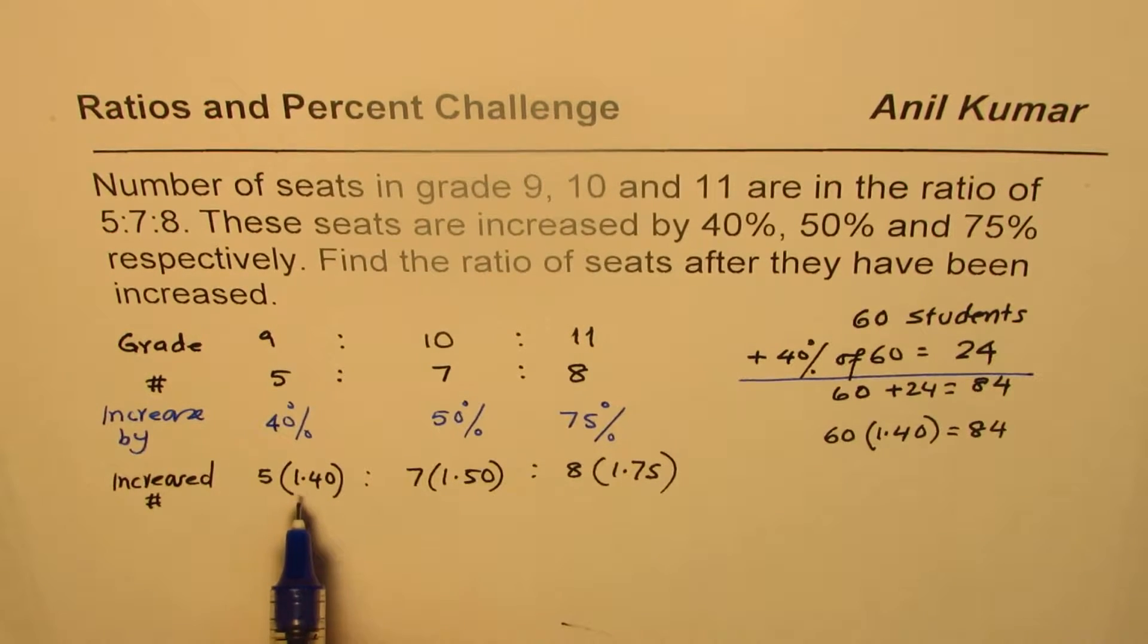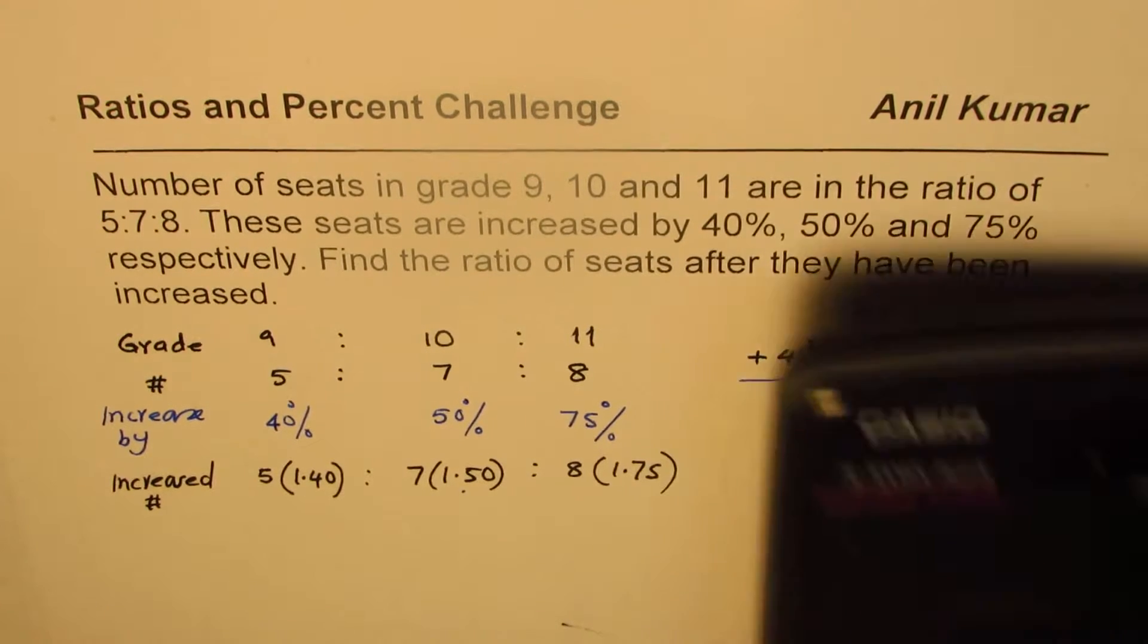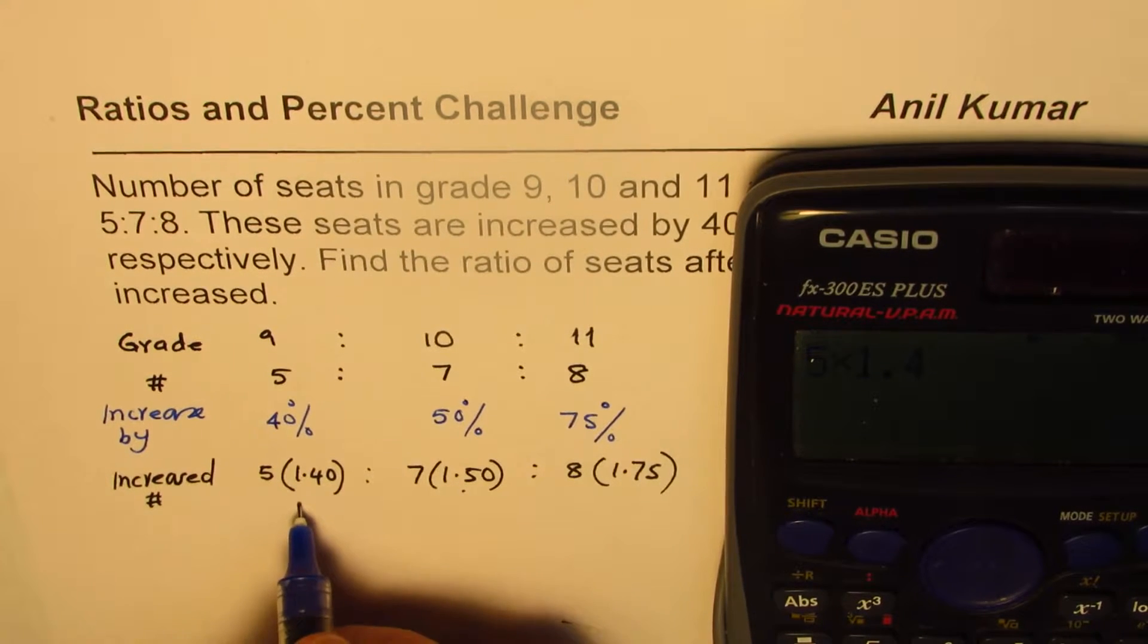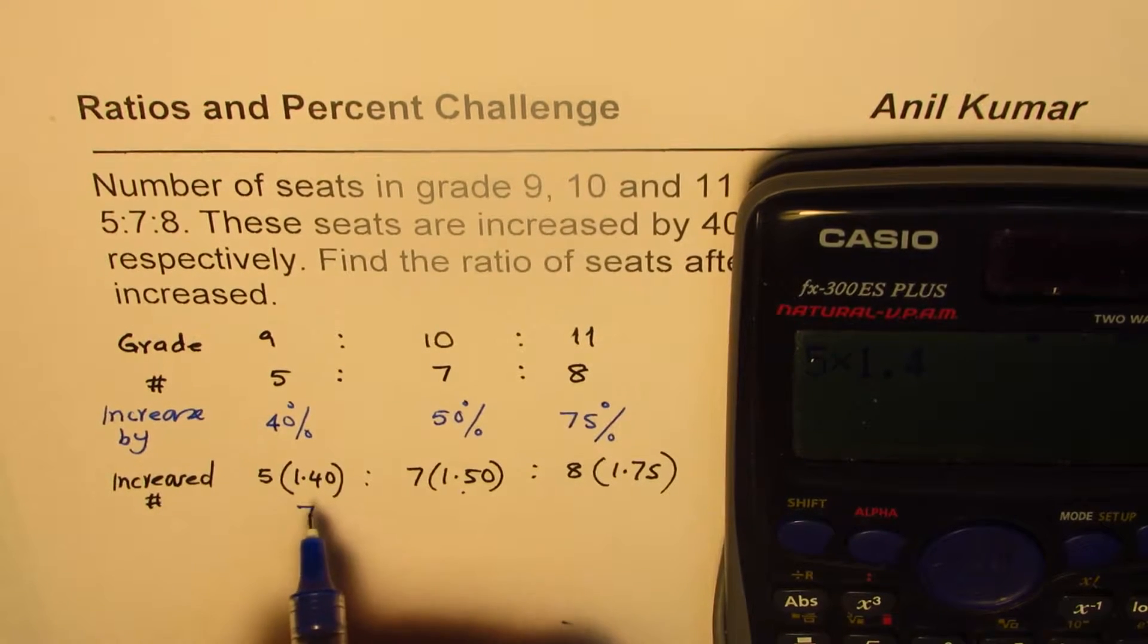So I hope that makes it clear, this step. So let's calculate what these values are. So we have 5 times 1.4, which is equals to 7. So this number increases from 5 to 7.